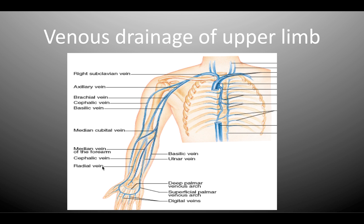Moving on to the venous drainage of the upper limb. We have the digital veins, a superficial and a deep palmar venous arch, the cephalic vein, the basilic vein, and the median cubital vein, which we will have a look at now.